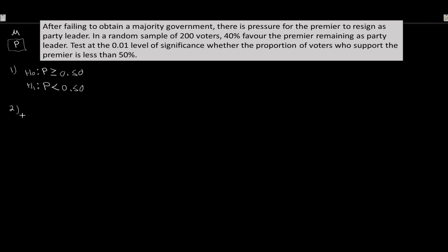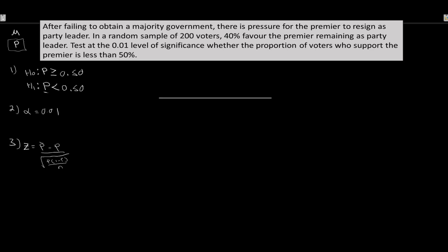Step two: significance level is 1%. Step three: since we're dealing with a proportion, the test statistic is always a z: z = (p̄ − p) / √(p(1−p)/n). Step four: if conditions are met, p̄ is normally distributed centered around the presumed population proportion of 50%. We need to find the rejection region.